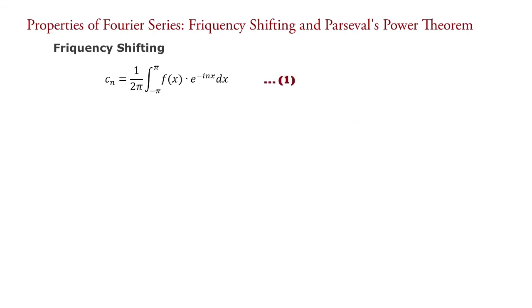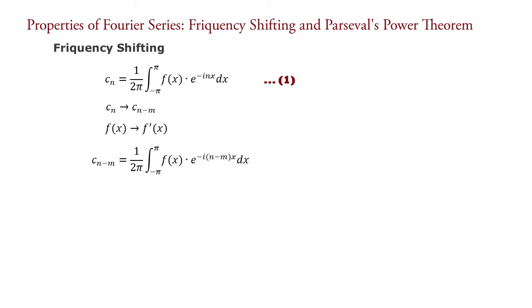Now, if frequency shift changes the Fourier coefficients from C_n to C_{n minus m}, simultaneously the signal is changed from f(x) to f′(x). The new complex Fourier coefficients C_{n minus m} equals 1 upon 2π times the integral from minus π to π of f(x) times e raised to minus i·(n minus m)·x dx — equation 2.